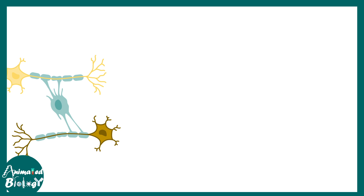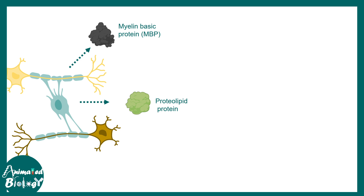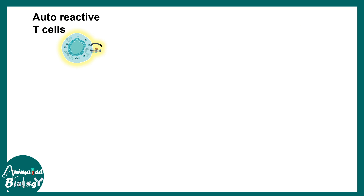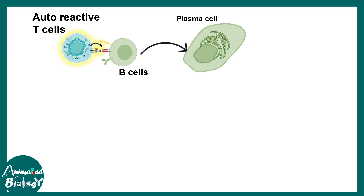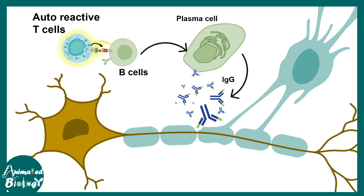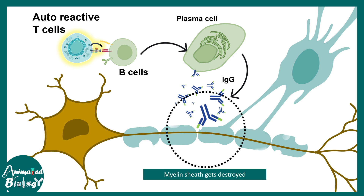Mature oligodendrocytes express proteins like myelin basic protein (MBP), proteolipid protein (PLP), and myelin oligodendrocyte glycoprotein (MOG). These are intrinsic to the body, so the immune system should not treat them as foreign. However, in multiple sclerosis, autoreactive T cells recognize these proteins, activate B cells which differentiate into plasma cells and secrete antibodies against these oligodendrocyte proteins. This triggers an immune response that destroys the myelin sheath through a complement-mediated pathway.